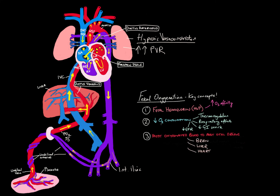Finally, there is preferential blood flow. The shunts in place allow the most oxygenated blood to reach the most vital organs. These shunts allow the best blood to get to the liver, the heart, and the brain. That's another reason the fetus is able to tolerate slightly lower incoming PO2s — it has mechanisms to deliver the best blood to the organs that need it most.